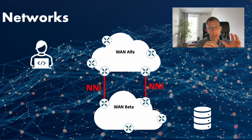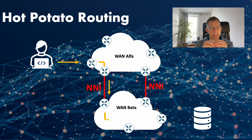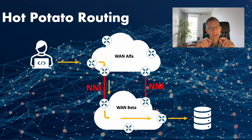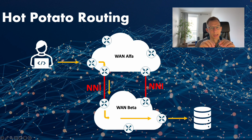In WAN Alpha, hot potato routing is a technique where network traffic is routed out of the network at the first exit point possible, minimizing the time data spends in the source WAN Alpha network. So when a user's data arrives at WAN Alpha and its destination is WAN Beta, it will be routed across the closest NNI between the two networks. This way we are passing the data away as soon as possible — just like a hot potato.